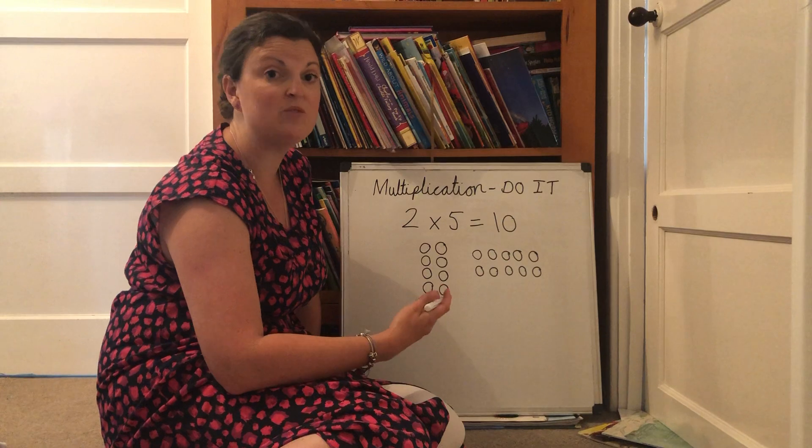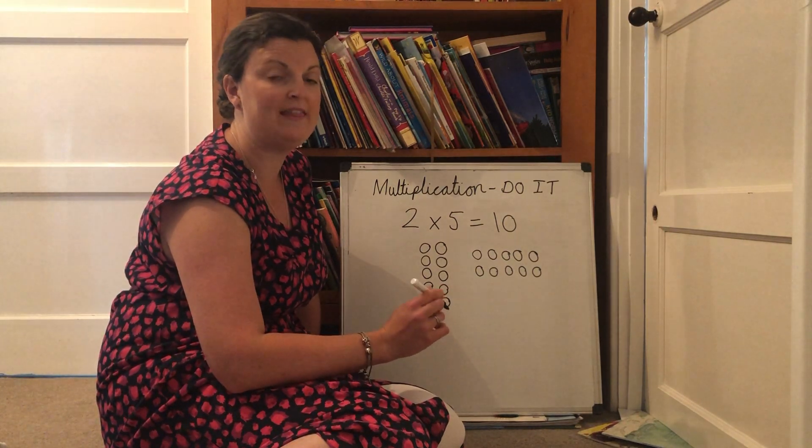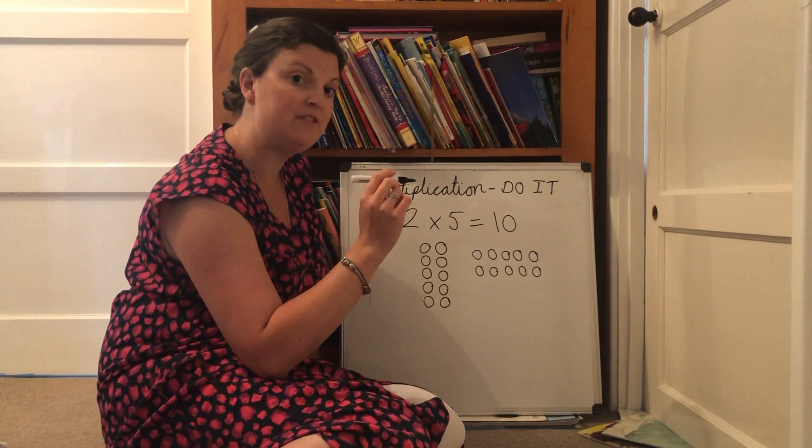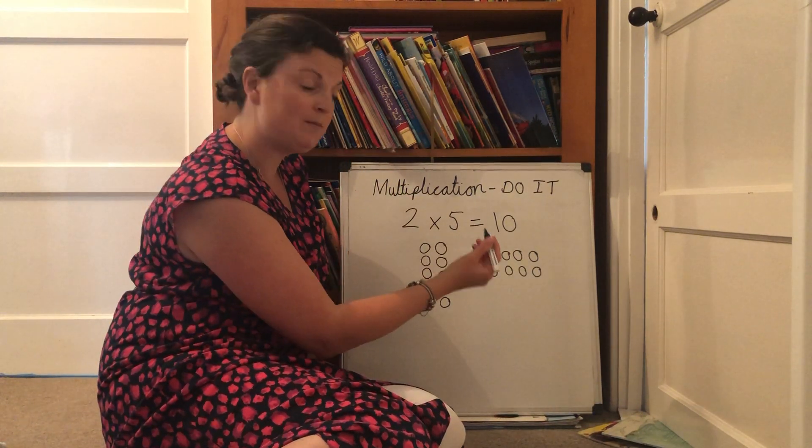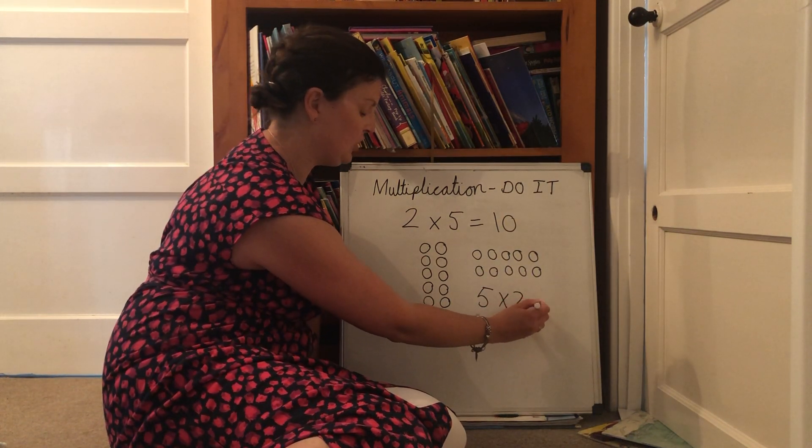And actually it works with multiplication because multiplication is commutative and that means I can swap those numbers around and it doesn't make a difference to the answer. So two times five is the same as saying five times two.